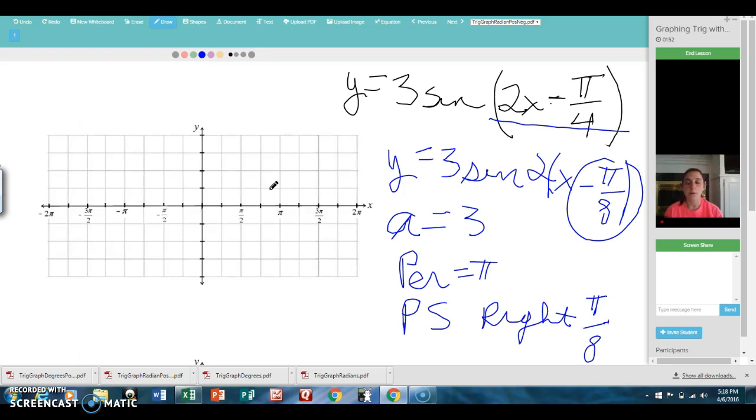All right, so what I'm going to do to graph this, and this is the part that's going to be the same for all of them, I'm going to graph this one time using a dotted line, graphing all of it except for the phase shift. So 3 sine 2x is what I'm going to graph, and then I'll deal with the phase shift later.